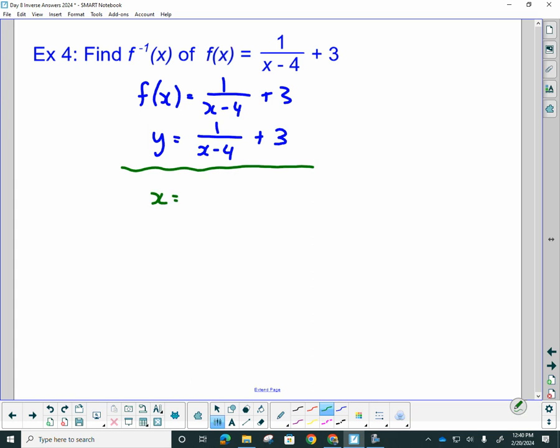And then the second step is to interchange your x and y's to write the inverse. So x now, instead of y equals, it's x equals 1 over, instead of x minus 4, it's y minus 4 plus 3. And we have to figure out then, how do we isolate for y?